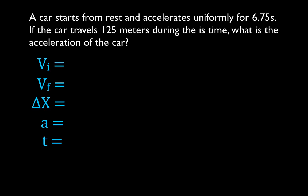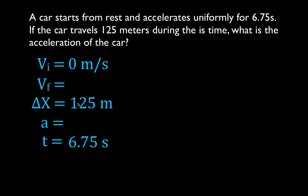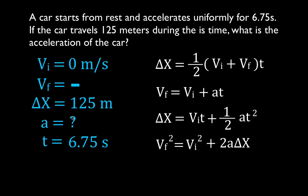Write down what you've been given. We know it starts from rest, so the initial velocity is zero. We are not given the final velocity, but we're given the time — 6.75 seconds — and the change in position — 125 meters. We're trying to solve for the acceleration, and we're not given or solving for the final velocity. So once again, we're given three variables and want to solve for the fourth.